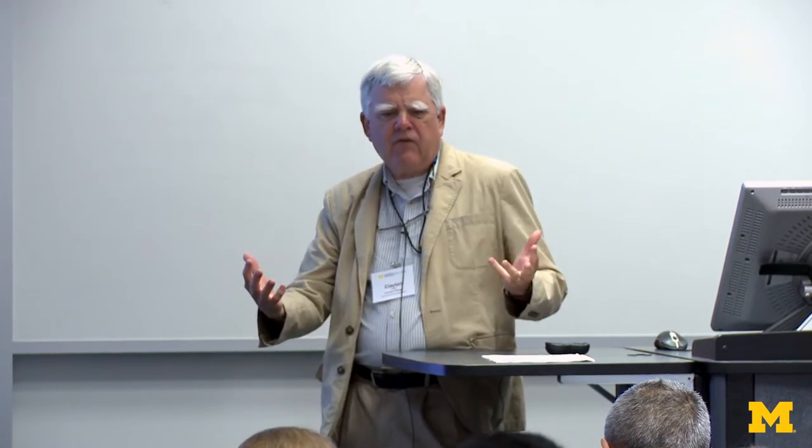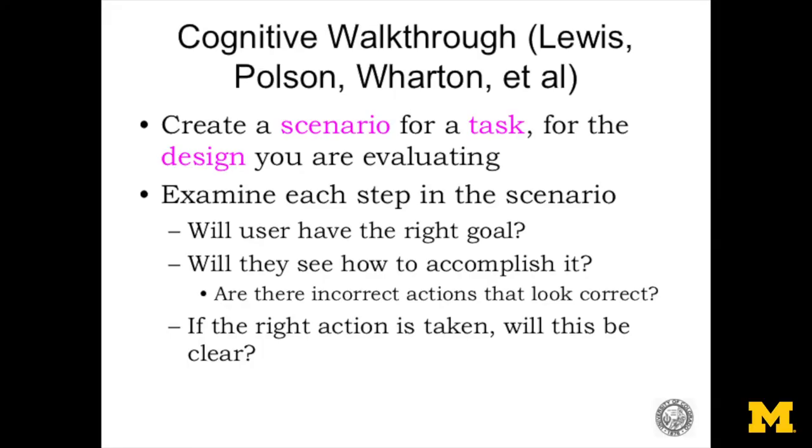Is there reason to believe that the user will have an appropriate goal? If they do have the appropriate goal, will the interface make it obvious to them how they have to accomplish that goal? It could be clear what they need to do at this point, but they can't figure out how to do it. And it happens over and over again — the person knows what they're trying to do, maybe there's a button label that really looks great for that step, but unfortunately there's another button that looks equally great. That's going to be a problem.